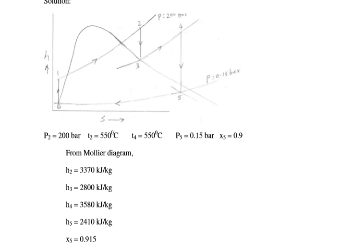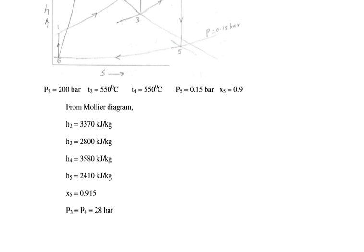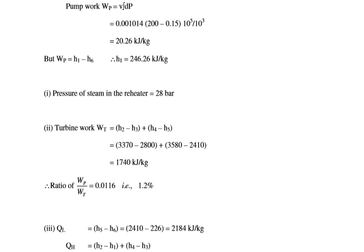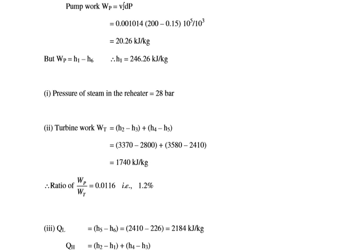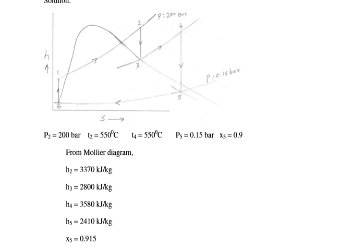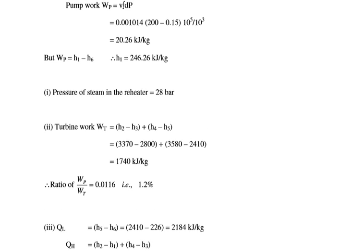Note that the given data has X5 = 0.9 while the Mollier chart gives 0.915. From the steam table, H6 = 226 kJ per kg. Pump work = VF × ΔP = 20.26 kJ per kg. W_pump = H1 minus H6, giving H1 = 246.26 kJ per kg. Therefore, the pressure of steam in the reheater is 28 bar.